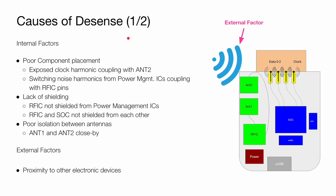Next, we talk about causes of desense. It can be caused by both internal and external factors. Internally, poor component placement, lack of shielding, and inadequate antenna isolation are common causes. Externally, it can be proximity to other electronic devices such as other smartphones, Wi-Fi access points, and so on.